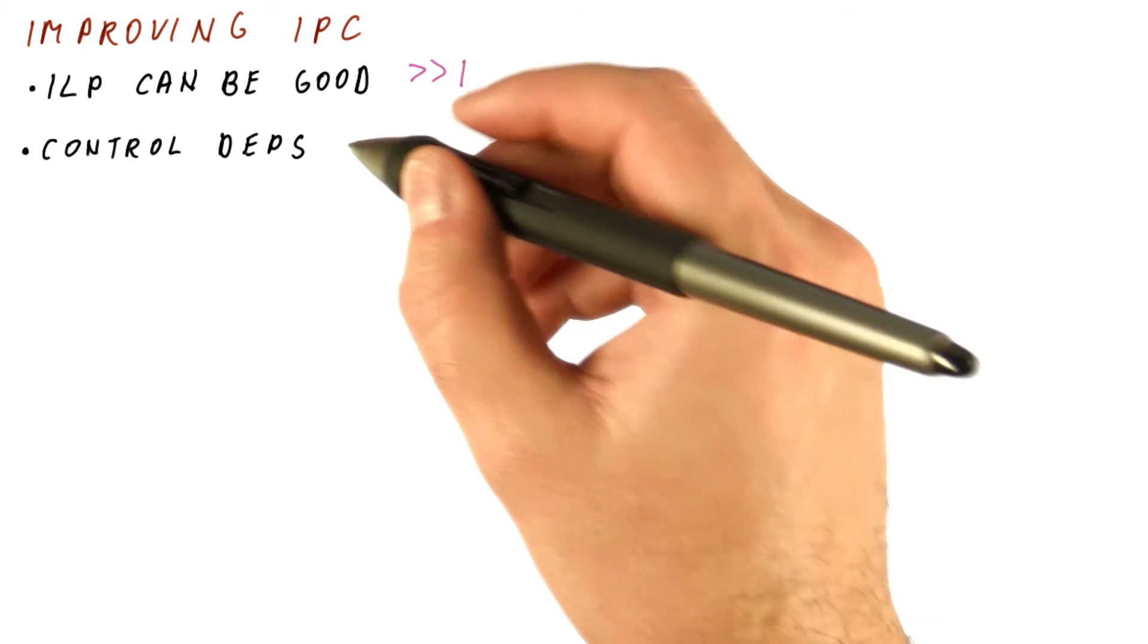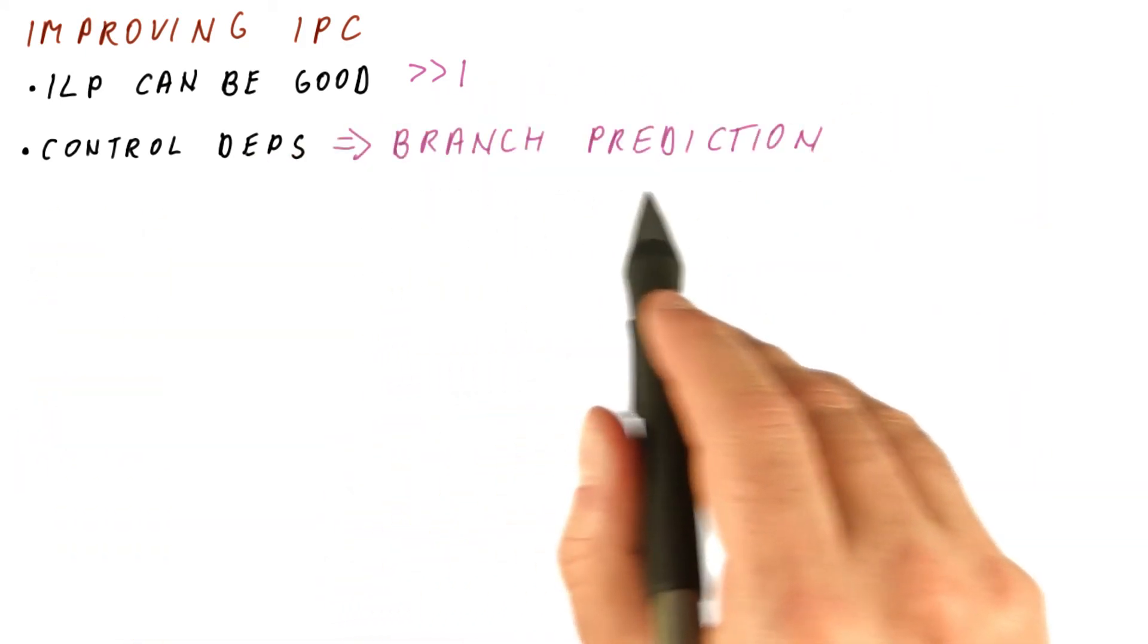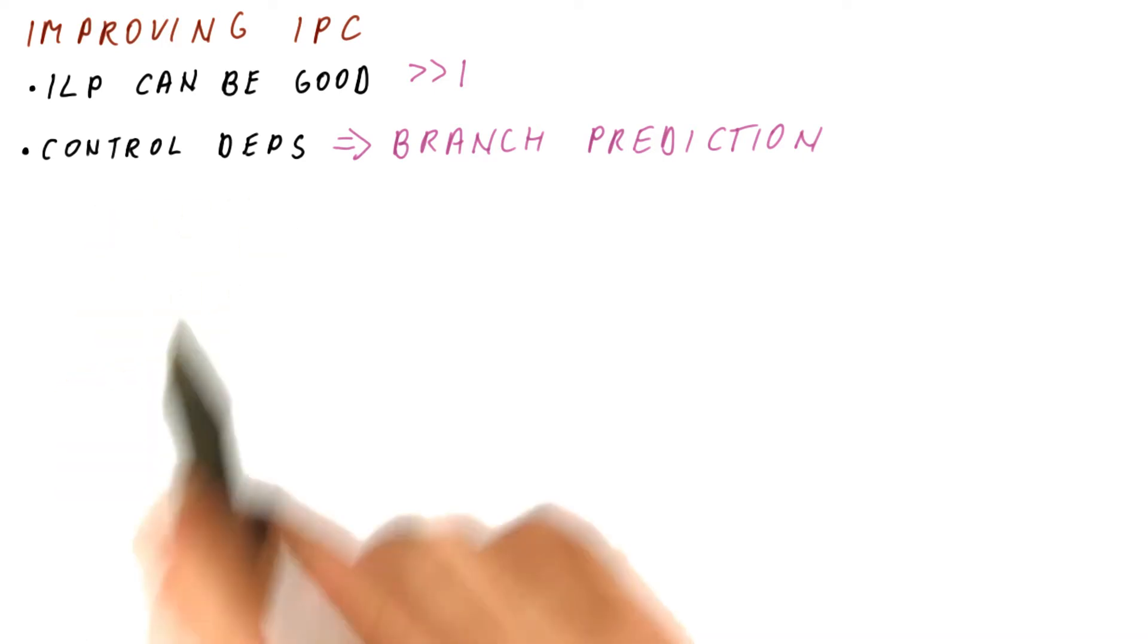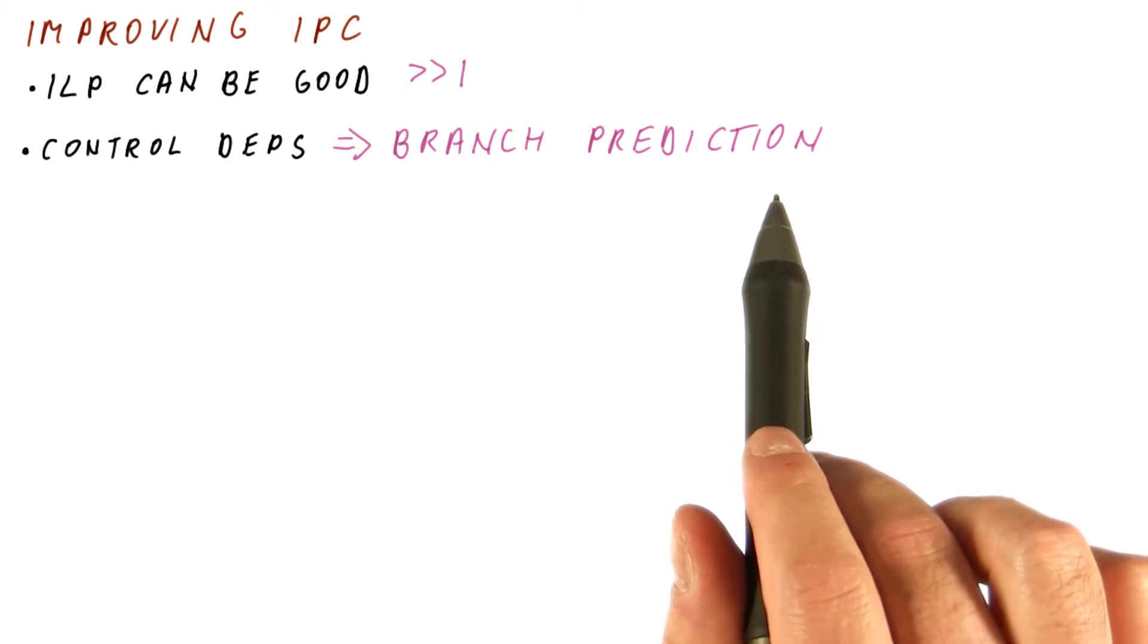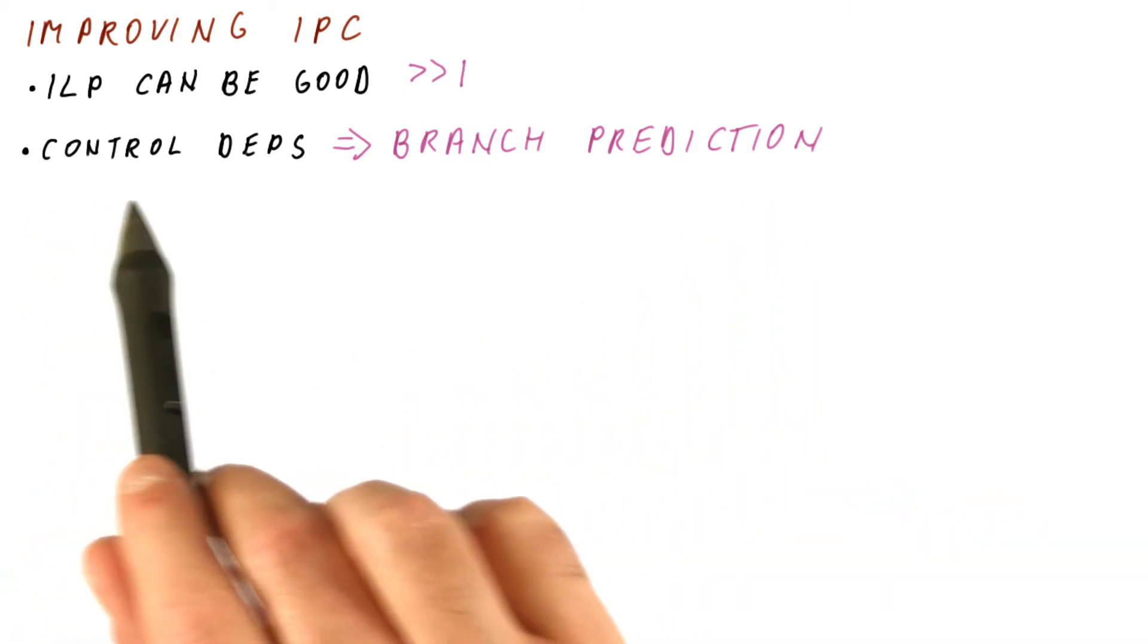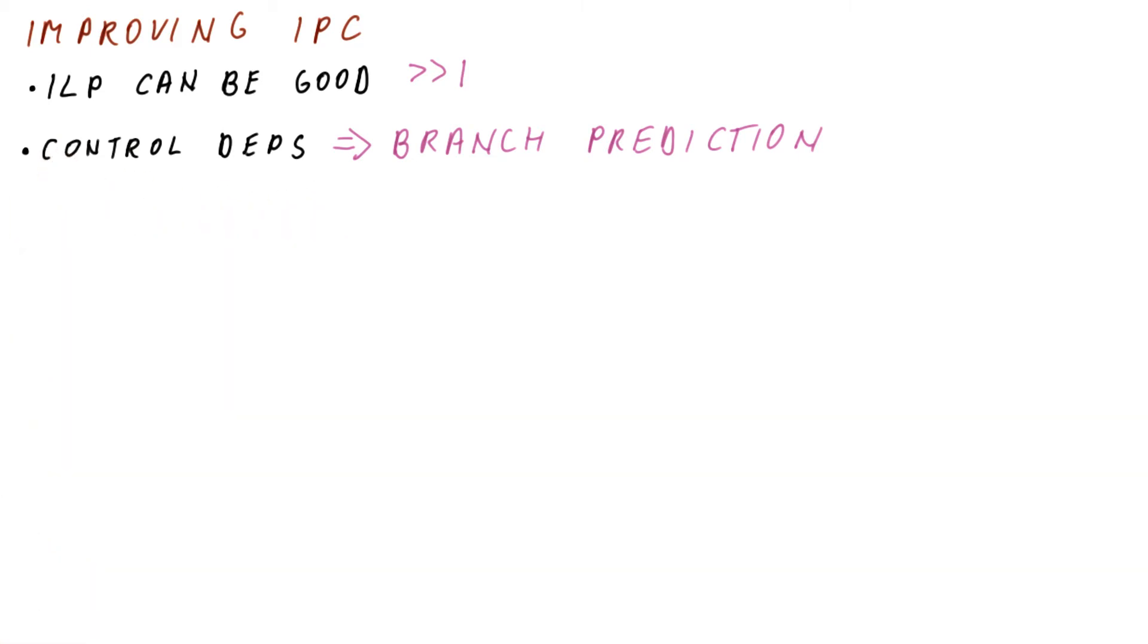But to achieve something close to that ILP, we need to handle the control dependencies. And we have seen how branch prediction can help eliminate control dependencies if branch prediction is correct. So if our branch prediction is very good, which on today's processors it is, then as far as control dependencies are concerned, our IPC will be very close to the ILP.